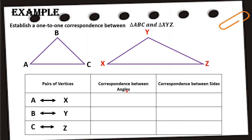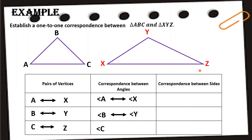Next, for the correspondence between angles. Note that the pairs of vertices and pairs of angles are the same — we just add the angle symbol before each letter. So angle A corresponds to angle X, angle B corresponds to angle Y, and angle C corresponds to angle Z. The pairs of angles mirror the pairs of vertices exactly.